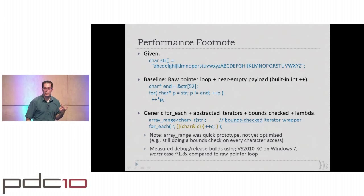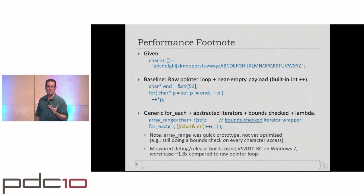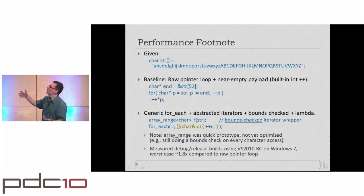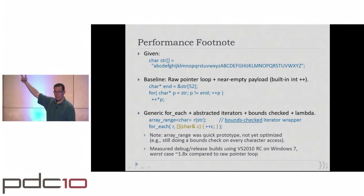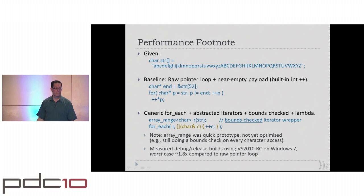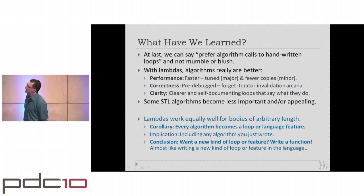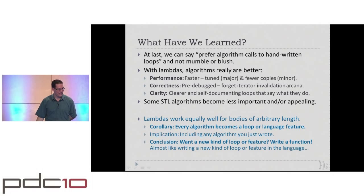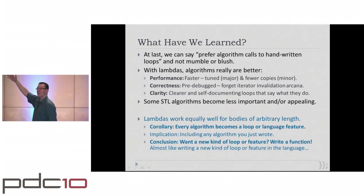For_each implementations can automatically unroll loops for you. So when talking about algorithms and lambdas, do not assume things are slow. I was trying very hard to measure almost pure overhead difference. So finally we can say: prefer algorithm calls to handwritten loops — get the performance benefit if the algorithm unrolls for you, the correctness because it comes debugged out of the box, and the clarity because you've raised the level of abstraction to say find_if or transform instead of for or while.